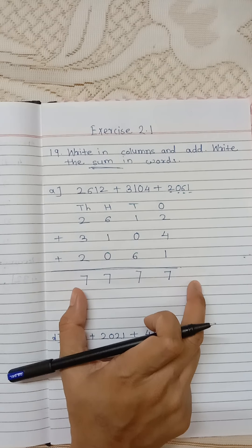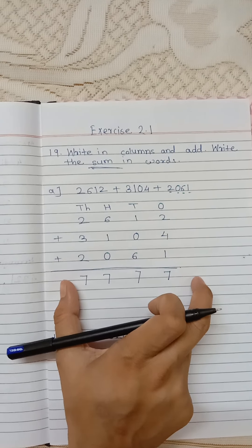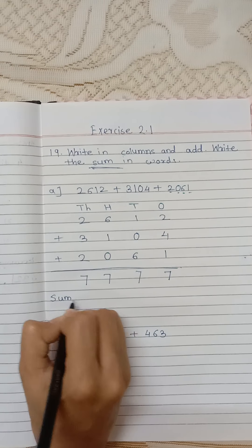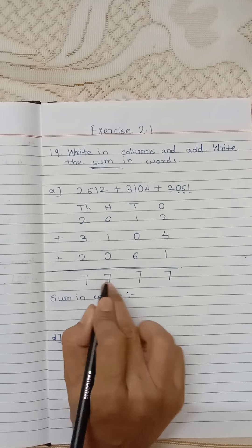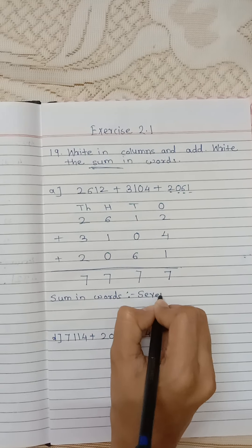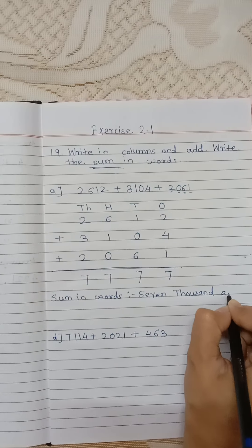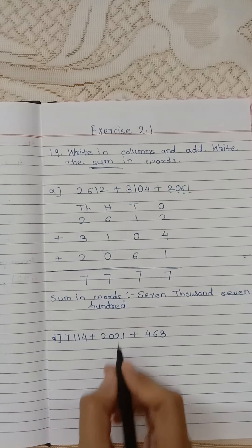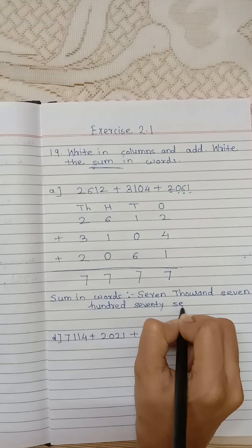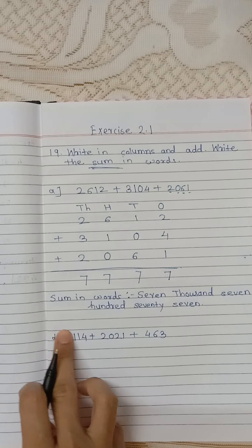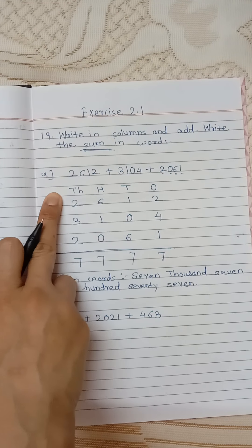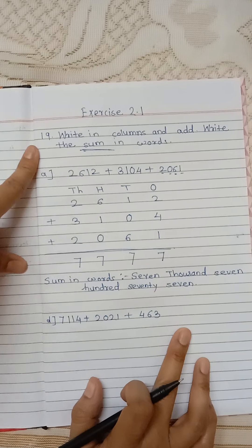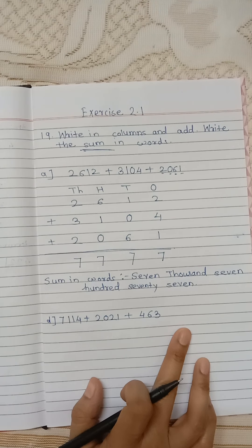So the answer is 7,777. This is our sum. We have to write this sum in words: seven thousand seven hundred seventy-seven. Now I have solved subpart A. I want you to solve subparts B and C on your own as homework. I will solve subpart D next.